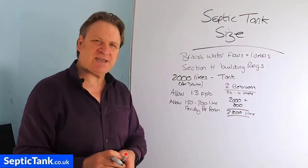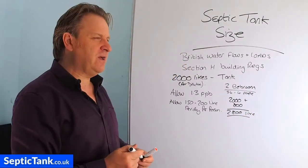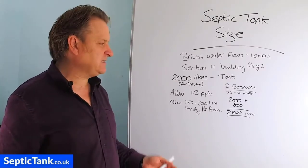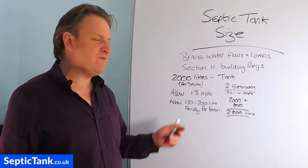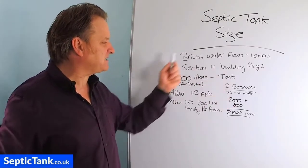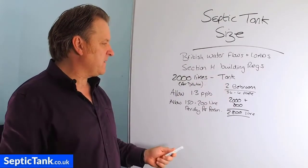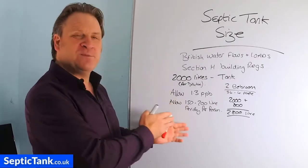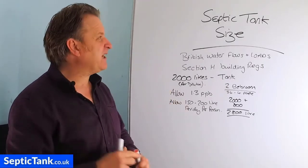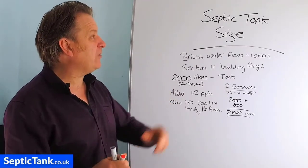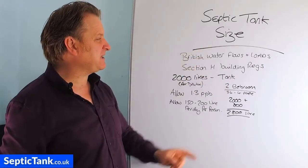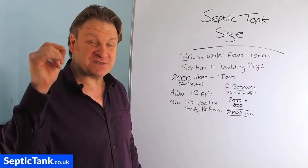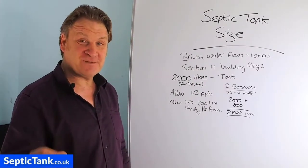Most septic tanks now start at 3000 litres, but the point is you've got a basis and a formula to help you work out the size of the septic tank you need for the number of bedrooms you have.